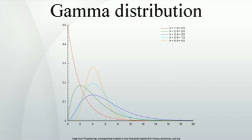For the cases where the Xi are independent but have different scale parameters, see Mathai and Moschopoulos. The gamma distribution exhibits infinite divisibility.